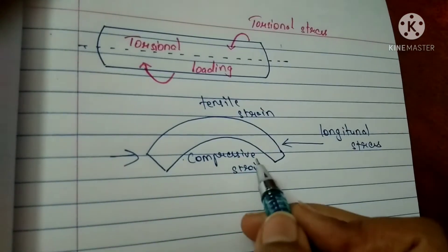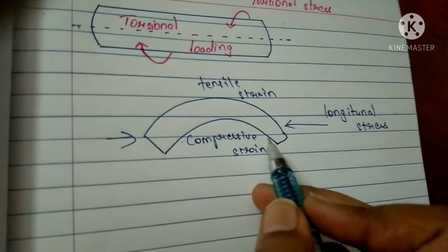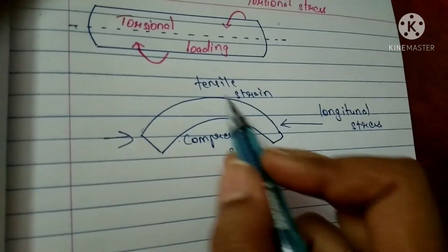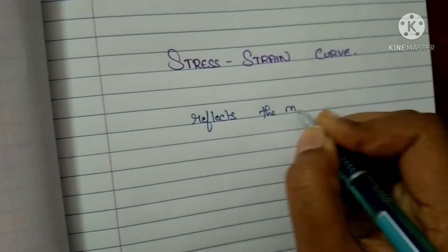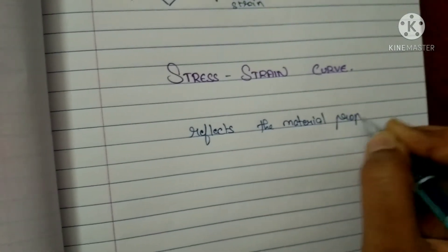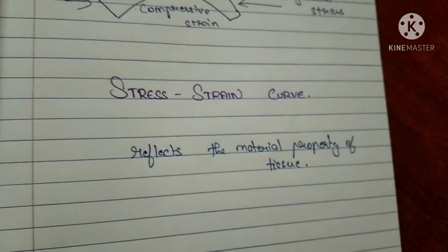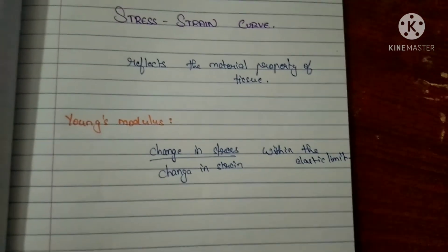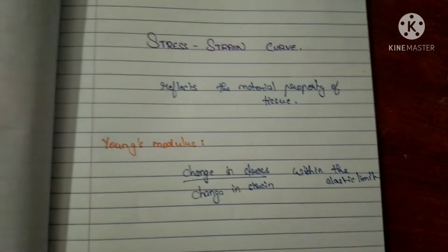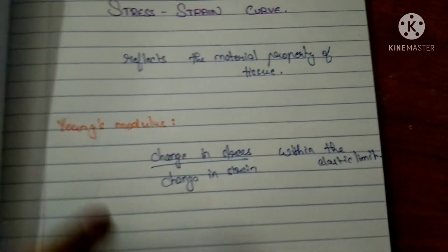So on a curved object, if a stress is acting, it creates compressive strain on the concave side and tensile strain on the convex side. The stress-strain curve reflects the properties of the tissue — we can compare the strength properties of the tissue under different circumstances, and understand how the tissue reacts to an applied load. Young's modulus is the change in stress divided by the change in strain within the elastic limit.